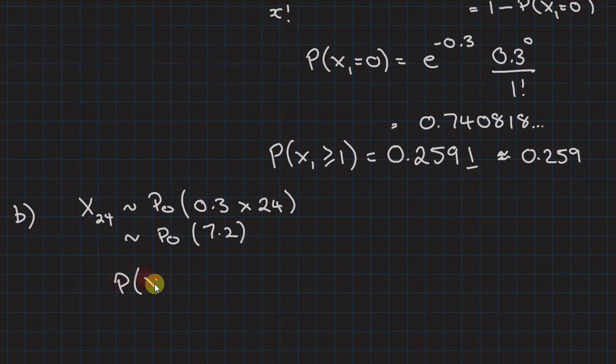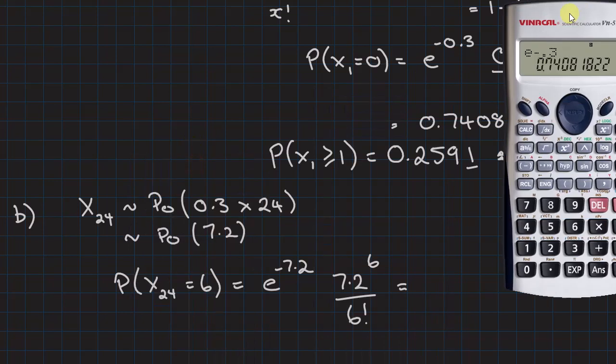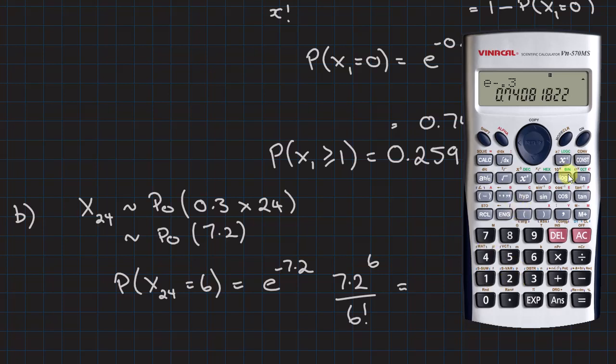I'm going to have to do it by calculation again using the same formula. So they said exactly 6, so P(X24=6) equals e to the minus 7.2, 7.2 to the power of 6 over 6 factorial. Now check it all in quickly. So we've got e to the shift, e to the minus 7.2, don't forget the minus. 7.2 to the power of 6, divide by 6 factorial. Looking for the exclamation mark, there's my factorial.